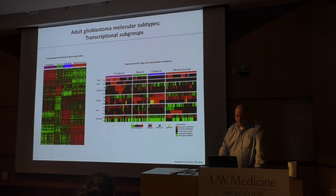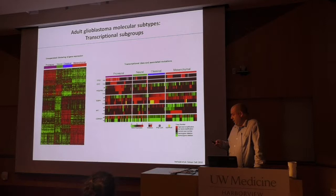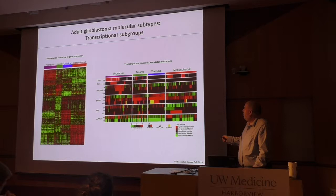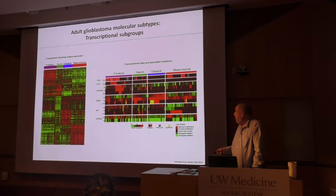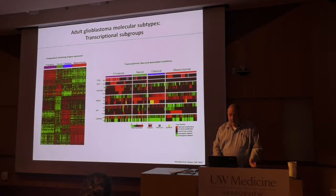There were other molecular attempts to categorize gliomas. One of the first was the Verhaak group looking at transcriptional subtypes of glioblastomas, originally defined as four classifications. We can scratch the neural one because it's been shown not to hold up due to sampling issues. The three major types that are non-IDH mutated are proneural — often associated with PDGF signaling — mesenchymal, often associated with TP53 and NF1 mutations, and classical, often thought of as EGFR-driven tumors.